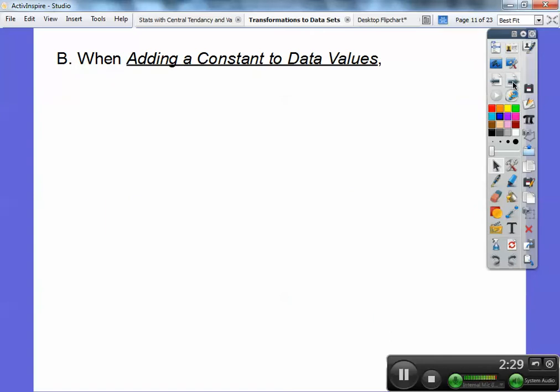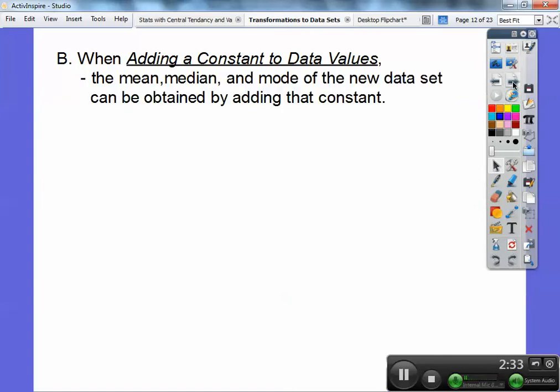Okay, so here's a rule. When adding a constant to the data values, then the mean, median, and mode of the new data sets can be obtained just by adding the same constant to those numbers. So whatever the mean is, add that constant. Whatever the median is, add that constant. And same for the mode. But for the range and standard deviation, they stay the same.